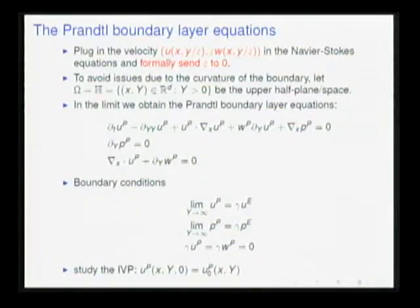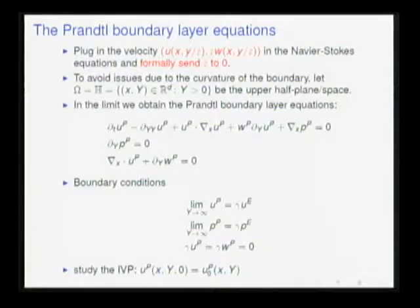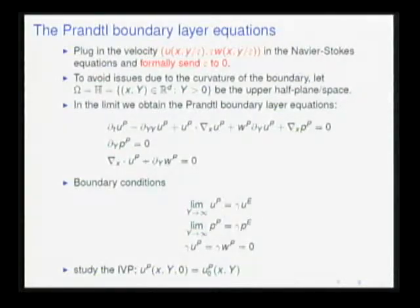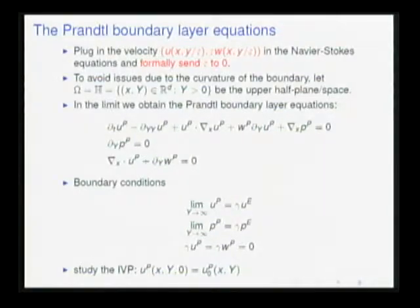Plugging the Prandtl ansatz into the Navier-Stokes equations and dropping O(epsilon) terms, you formally get the Prandtl equations. These have a heat equation with dissipation only in the normal direction, the full transport equation, and the pressure gradient — with the caveat that pressure does not depend on the normal direction and is specified by the underlying Euler pressure. The boundary conditions are: at the top of the boundary layer, the Prandtl solution converges to the trace of the Euler solution; the pressure matches the Euler pressure; and on the wall, you have zero Dirichlet boundary conditions.